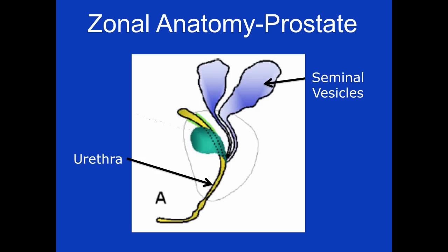This green area is the transition zone, which consists of two independent lobes extending from the bladder neck towards the verumontanum. As men age, the periurethral glands and the transition zone frequently hypertrophy.